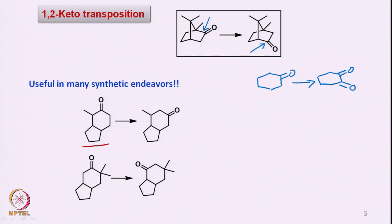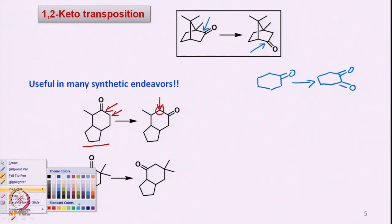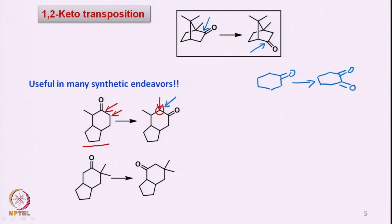For example, if one takes an example of this kind and wants to carry out some transformations at a given position, one possibility of course is to directly functionalize this carbonyl group. But if one wants to utilize both hydrogens here, we need to convert this carbonyl group to the next position. Once that is done, you now have two possibilities: functionalization at one center and also at another center. So if you have arrived at this molecule and want to convert the carbonyl from this position to the next, what are the ways? This is just a hypothetical example.